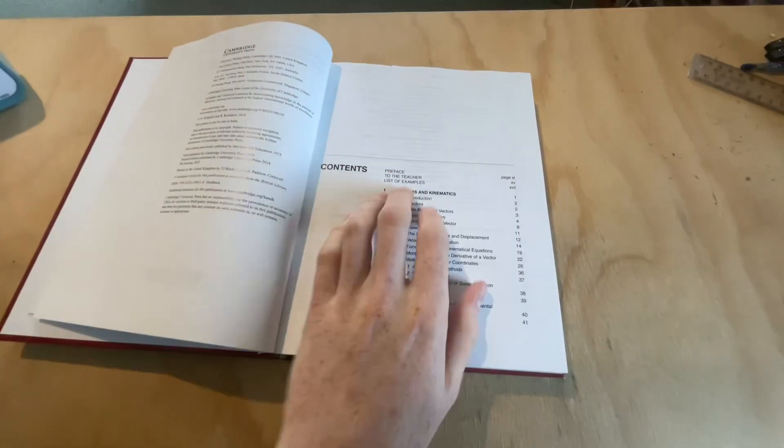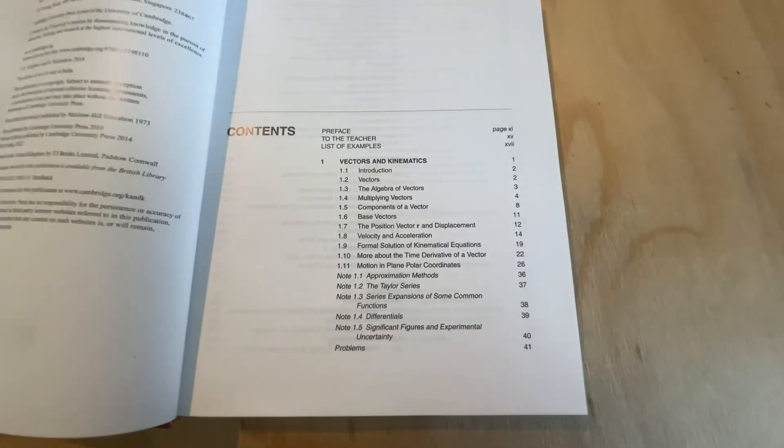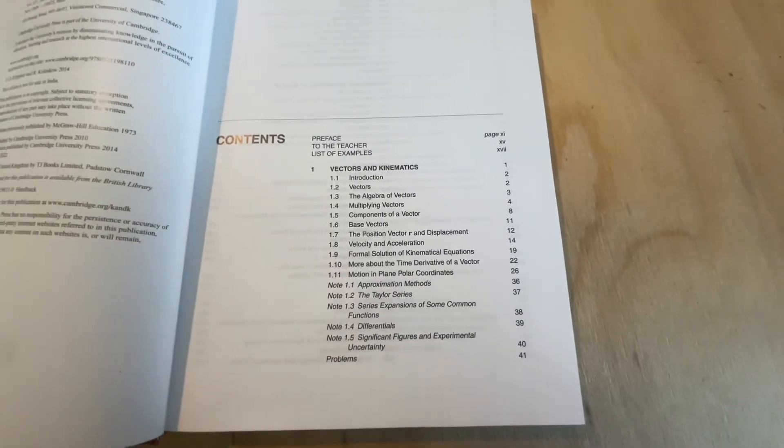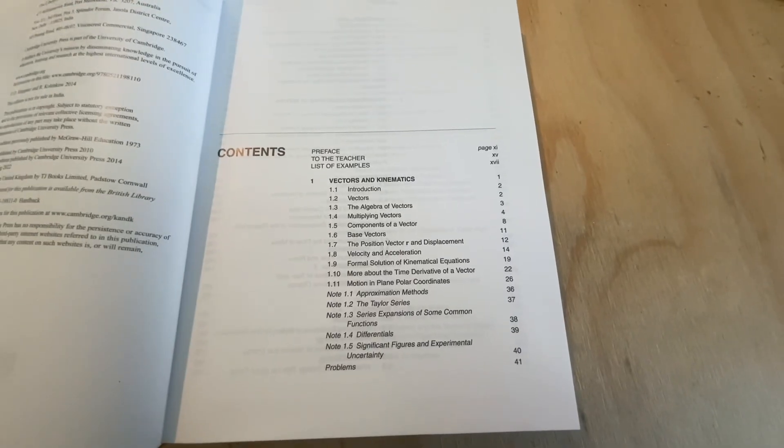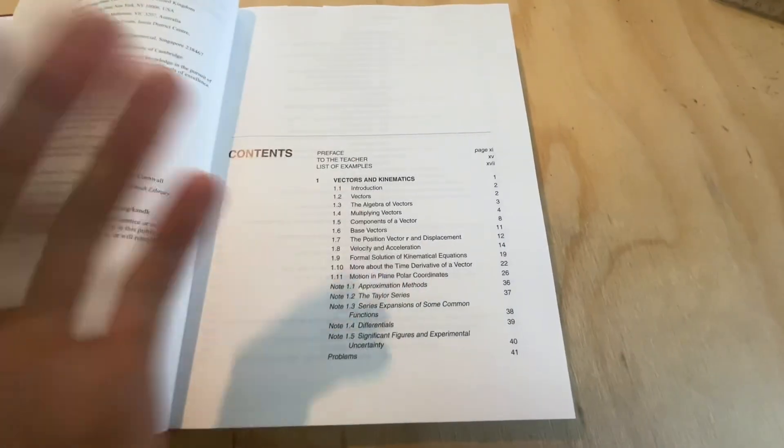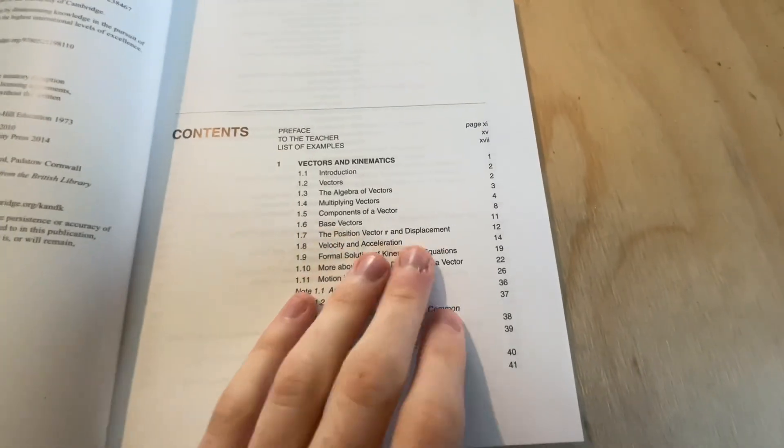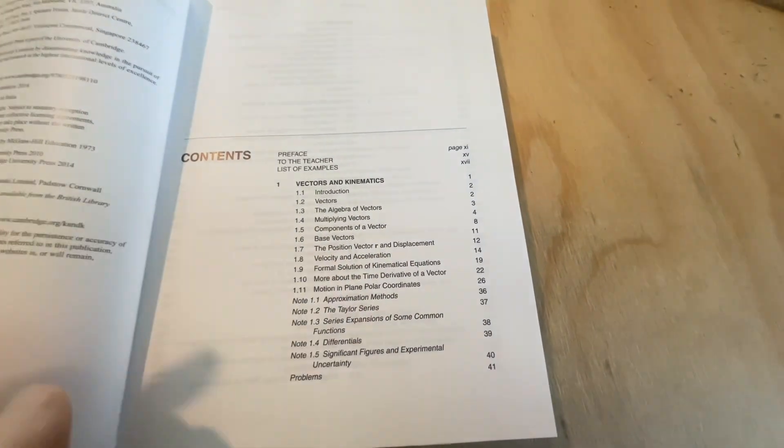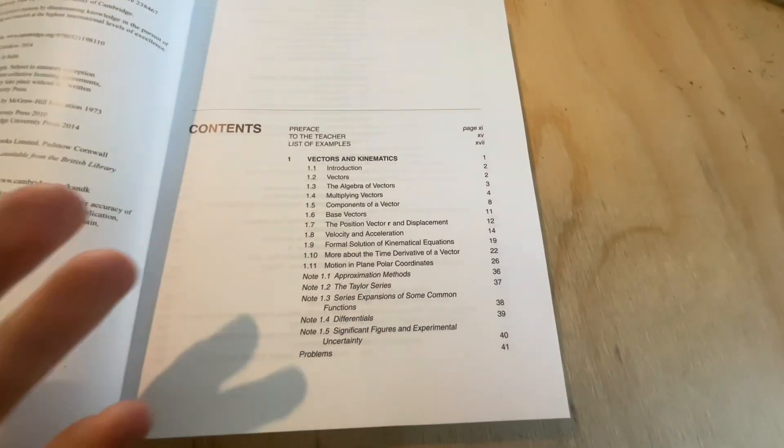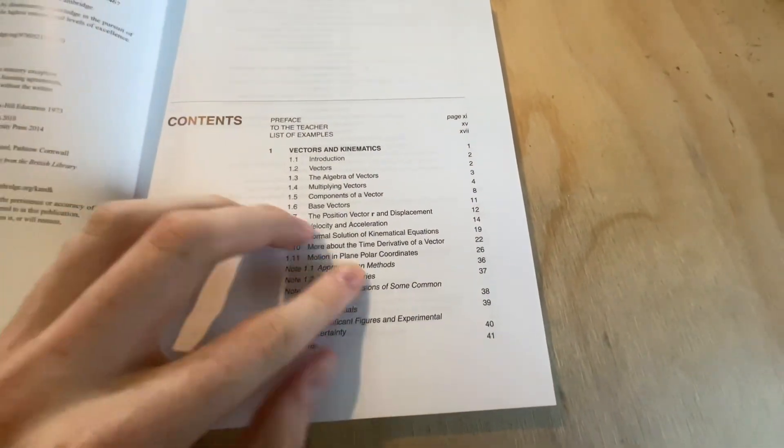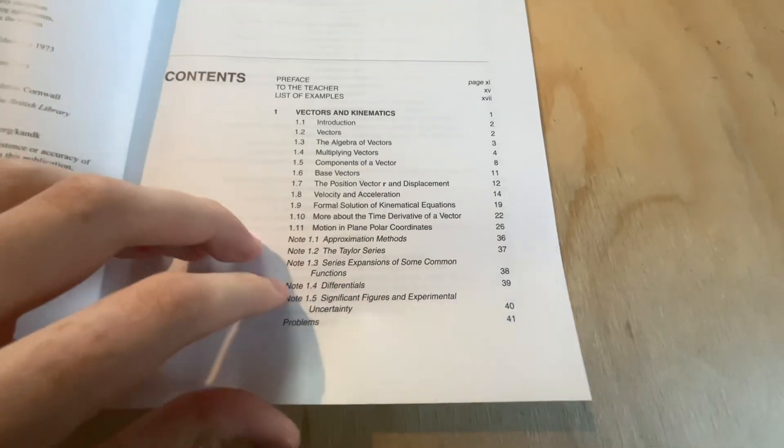Okay, so chapter one, we've got vectors and kinematics, very standard, although this chapter does go a lot more in-depth to lots of different vector operations. It's really rigorous with the whole dot product, cross product, really making sure you know and understand what these vector operations are. Talks of course about the kinematic quantities like position, velocity and acceleration, and of course constructing them using the derivatives. And then it talks a little bit about Taylor series and some other stuff at the end here.